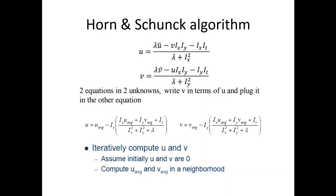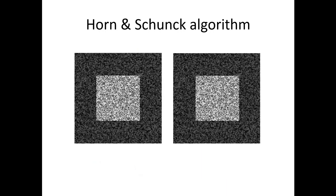We estimate u and v iteratively. We set u and v initially to zero, so initially u_avg and v_avg are also zero. We compute u and v, then in the next iteration we use those values to compute u_avg and v_avg from the four neighboring pixels, and we keep going. The algorithm estimates the three derivatives Ix, Iy, and It, then iteratively updates u and v.